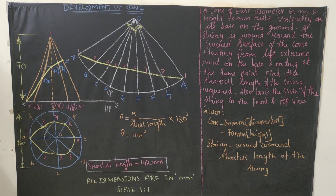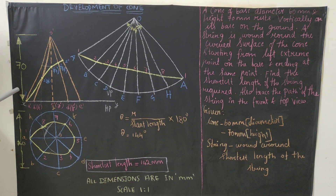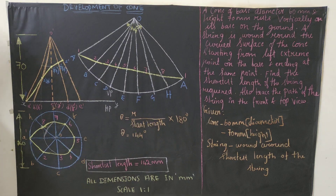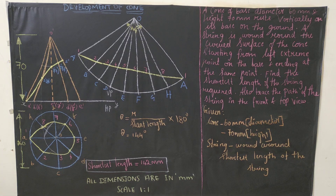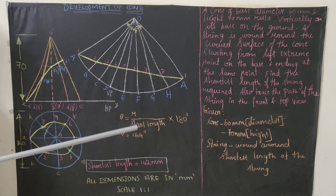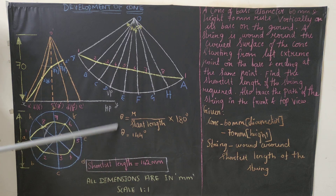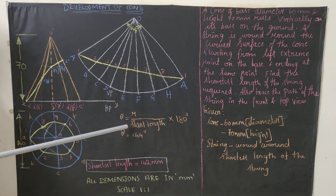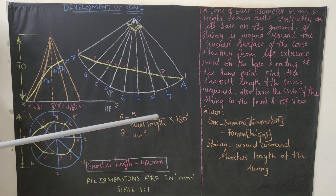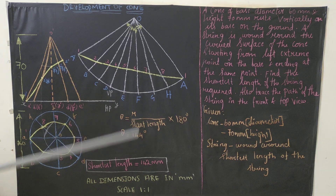The heading is 'Development of Cone' with text height 10 mm written in capital letters. Write your question number inside a circle. Borders: left 20 mm, right 20 mm, top 10 mm, bottom 10 mm, drawn with HB pencil. The string path and the note 'Shortest length = 142 mm' should be written with HB pencil. Also box the formula θ = R / slant length × 180° = 144°.